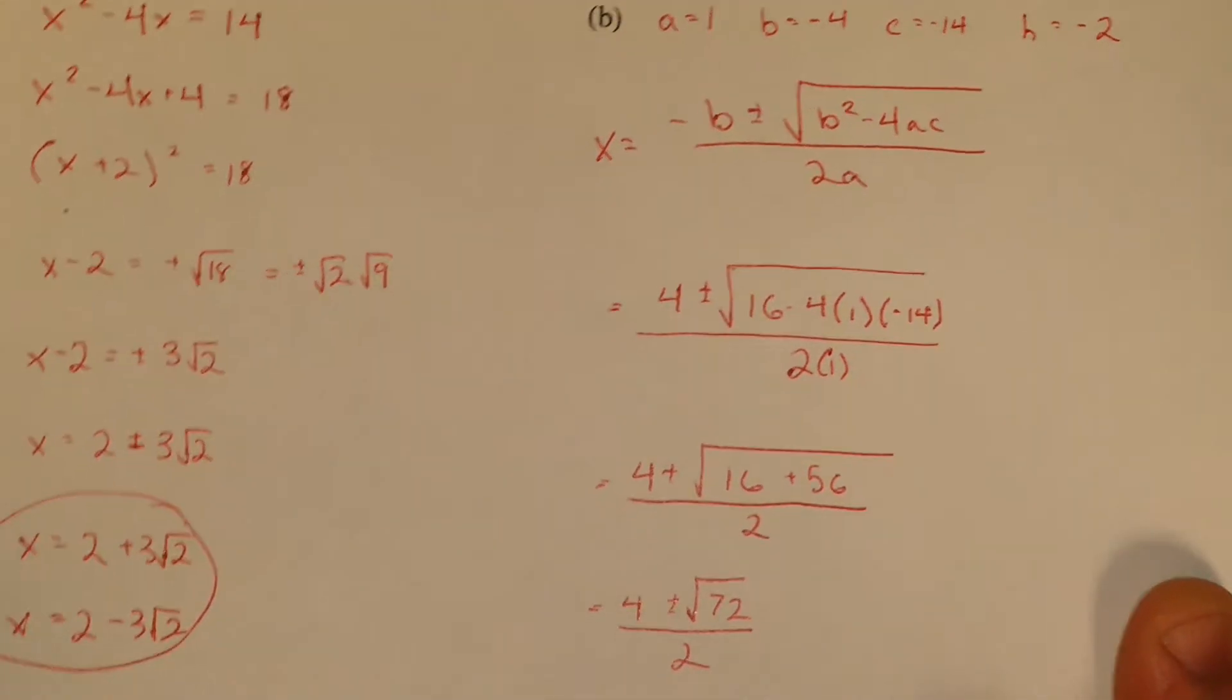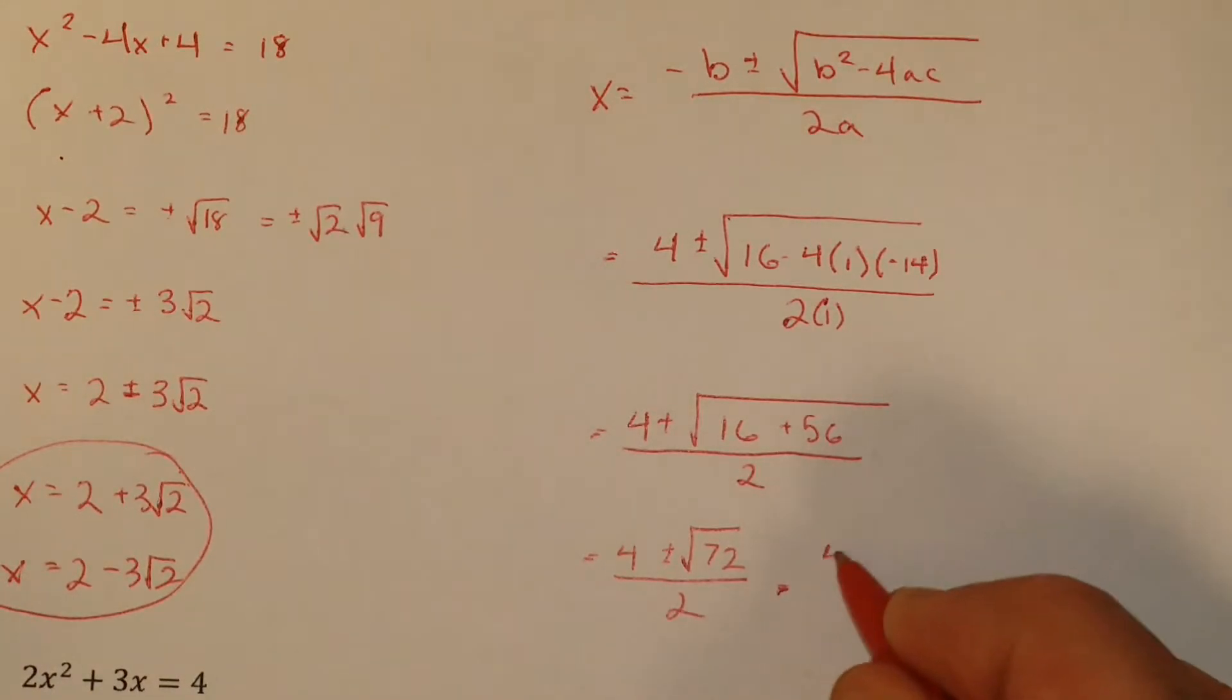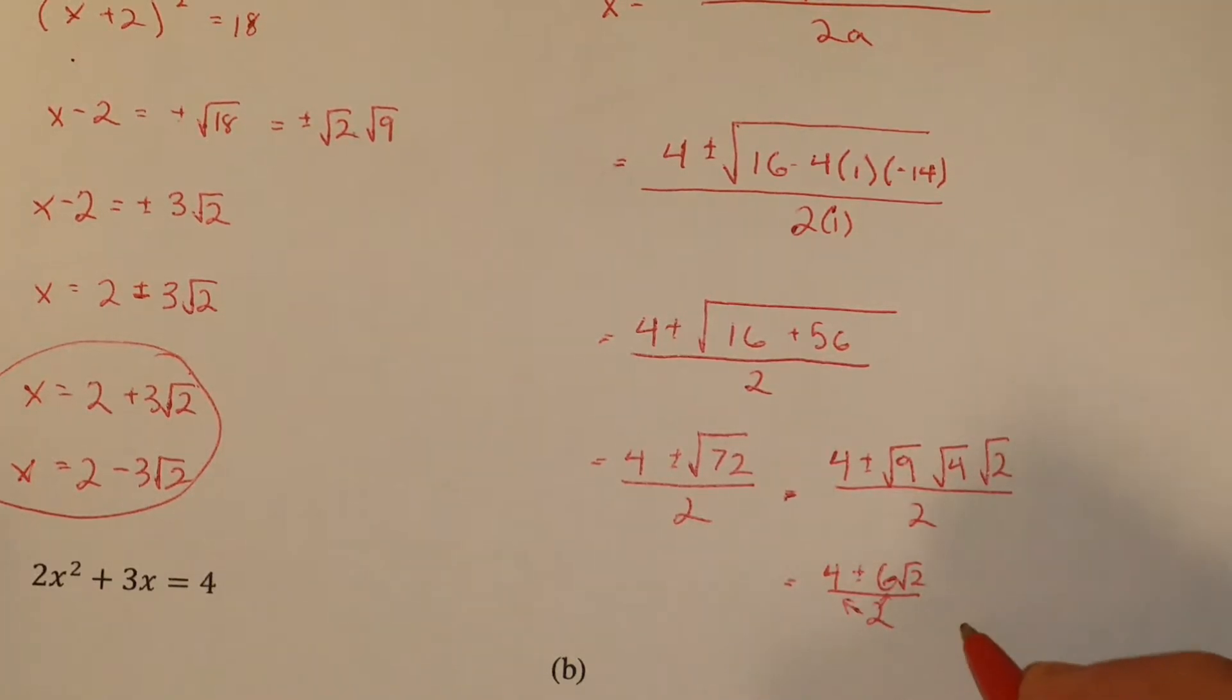And again, we need to simplify that square root. So I'm going to separate it into, so it's divisible by 9 because that's 9 by 8. And 8 is 4 times 2. So we can split that root up like that. So I'm finally getting 4 plus or minus 6 root 2 over 2. And then I just divide both of those terms. So I get 2 plus or minus 3 root 2, which is what I had over there.